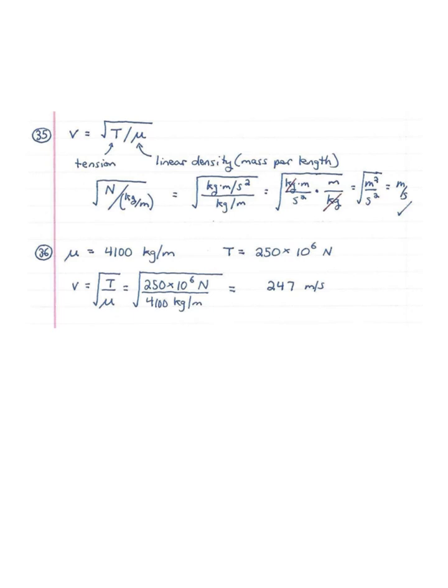Number 35: we have the formula for the wave on a string, which is the square root of the tension force divided by mu, the linear density. It says verify that the SI units are, in fact, meters per second. This is a question of dimensional analysis. Tension is newtons because it's a force, divided by mu which is mass per length — kilograms per meter. In the numerator, we turn newtons into kilograms meters per second squared, divided by kilograms per meter.